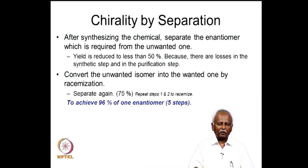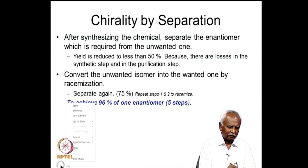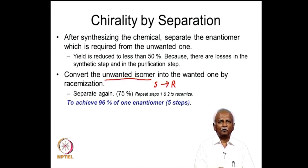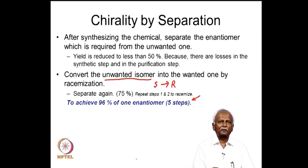One way to address this is to convert the unwanted isomer. Suppose you want the R isomer — you take the S isomer and convert it into the R isomer. This type of conversion allows you to separate the two isomers again, but to prepare more than 96 percent of the desired enantiomer, you need to carry out almost five steps. Although difficult, sometimes it is useful if you simply cannot make the chiral form directly — you try to convert the unwanted form into the right form.